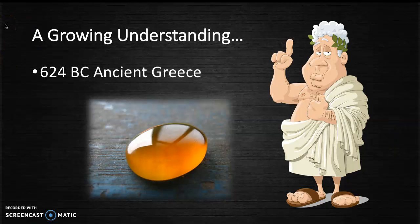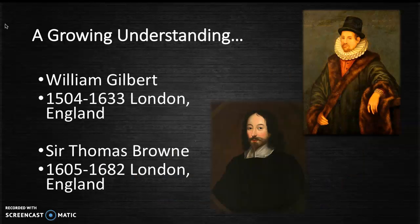We've had a growing understanding of triboelectric electrification that all began in 624 BC in ancient Greece with a guy named Thales of Miletus. He took a piece of amber and rubbed it against fur and afterward found that amber could pick up pieces of straw. He called amber 'electron.' About 2000 years later in England, William Gilbert discovered that many materials were capable of being rubbed together to create charge. He called this capacity 'electrics.'